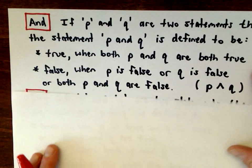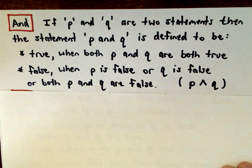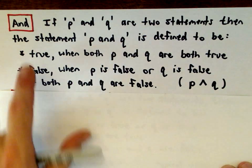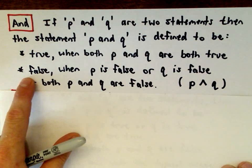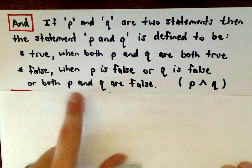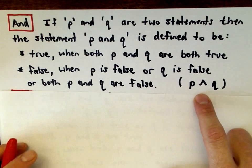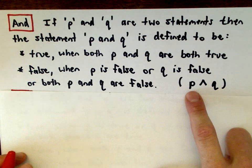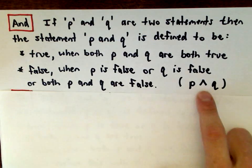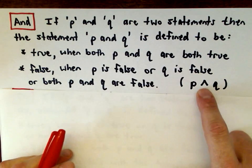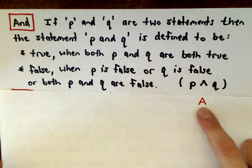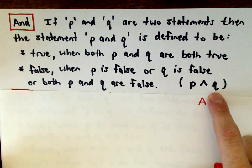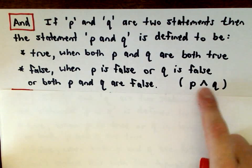For and-statements: if P and Q are two statements, then the statement 'P and Q' is defined to be true when both P and Q are true, and false if either statement is false or if they're both false. The notation you'll see is a little caret symbol. The way I remember it — if you added an extra bar it would look like the letter A, and 'and' starts with A.